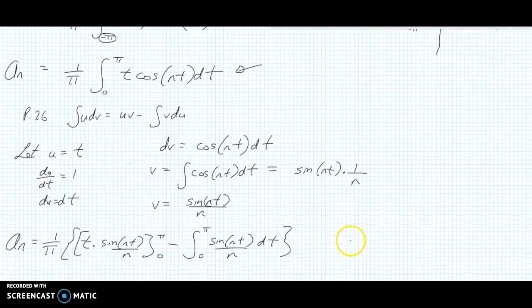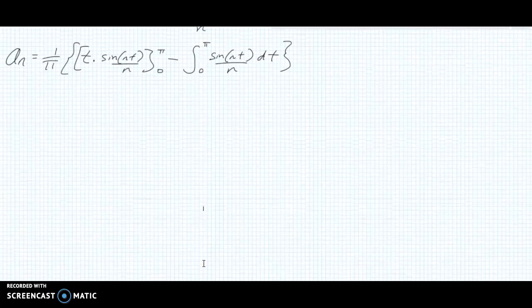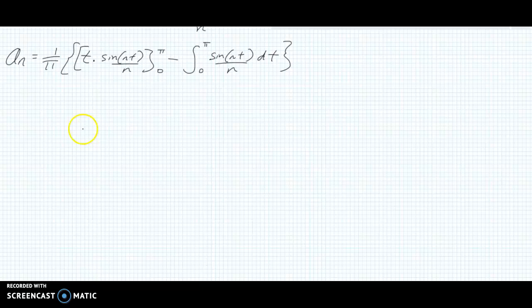Now we need to use some careful integration skills. So we have 1 over π, and applying the limits here, we're subbing in π for t, so we get π times sin(nπ) over n minus, now t then is going to be 0, so you're going to have 0 times this structure here, which means it's going to end up being 0 anyway.